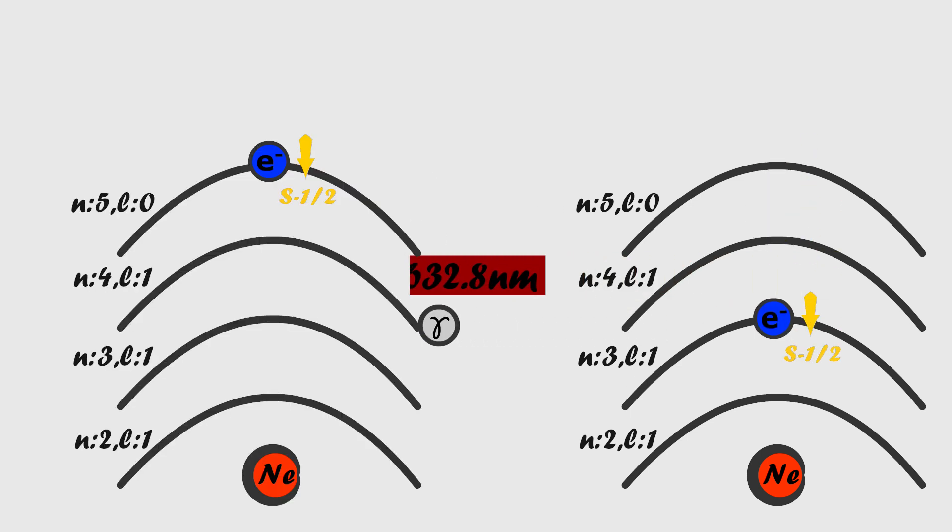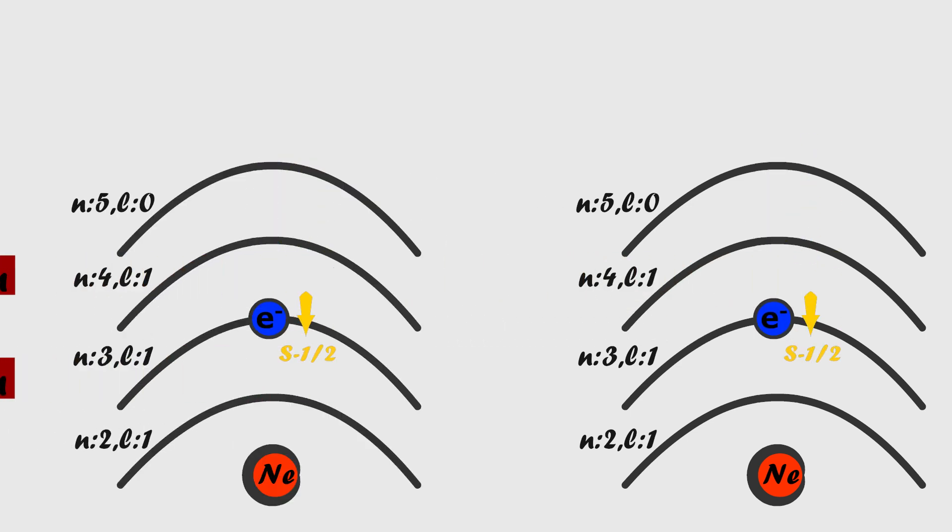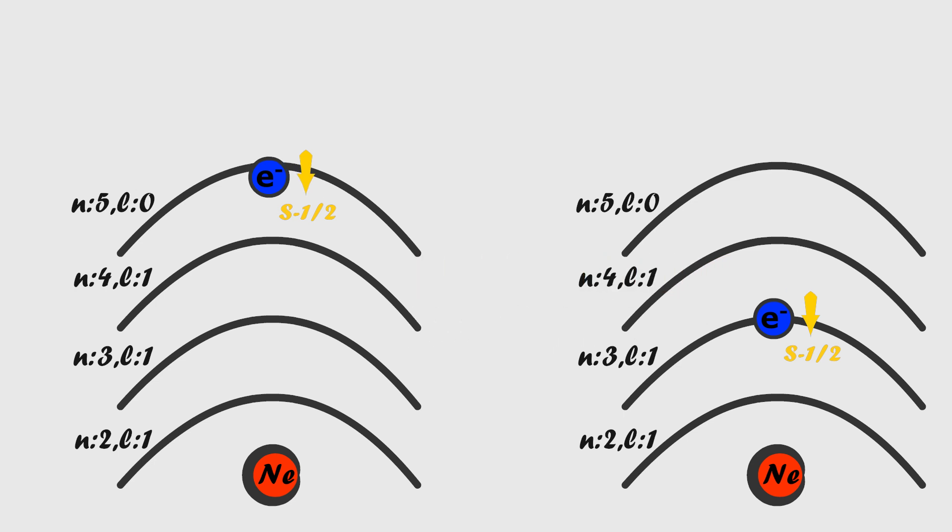If one of these emitted photons strikes an already excited neon atom, the neon atom also transitions to its stable state and emits a photon with the same phase as the incoming photon. In this way, coherence is achieved.